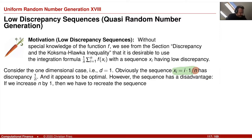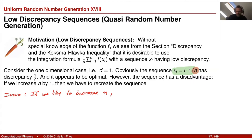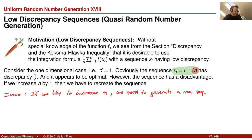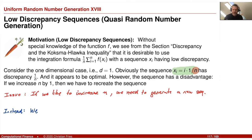However, this equidistributed sequence has an issue: whenever we want to increase n, we need to generate a completely new sequence, because every point depends on n. This is not what we want — we want to retain the nice Monte Carlo property of being able to add more points to increase accuracy.